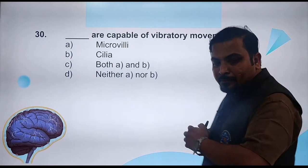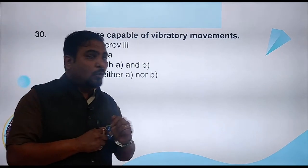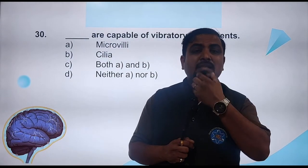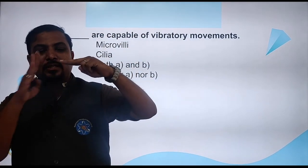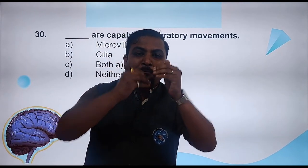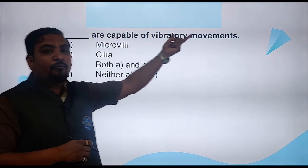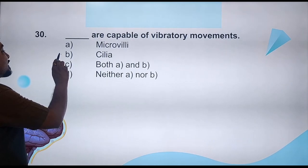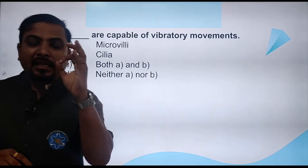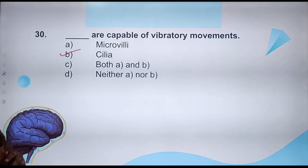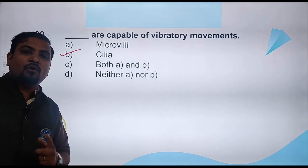Correct! Cilia are capable of vibratory movements. I told you — cilia are present in your nostrils and trachea and they can vibrate. They can perform vibratory movements and push particles in a particular direction. So the answer is cilia. For question 30, the right answer is option B.